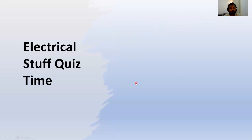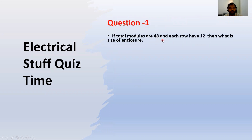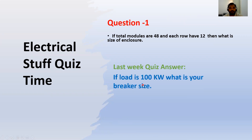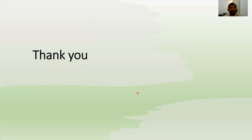Quiz time! Question 1: If the total number of modules is 48 and each row has 12, what is the size of the enclosure? Last week's answer: For a 100kW load, the breaker size is 200 amperes. Thanks for watching — please support with subscriptions, likes, and shares!